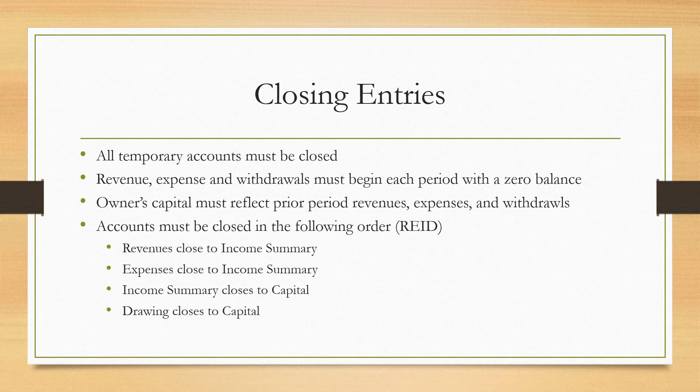E is for expenses — expenses need to close to the income summary. I is for income summary — income summary needs to close to our capital account. And D is for drawing, and it needs to close to the capital account as well. So revenues and expenses close to income summary, and income summary gives us our net income, which then flows over to our capital account.